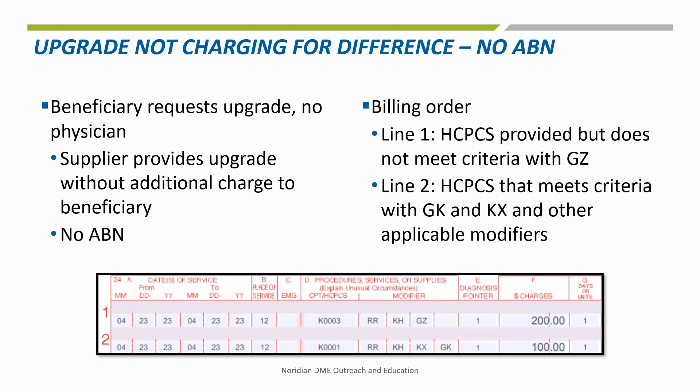In this example, the physician has not ordered the upgrade, but it is provided at the request of the beneficiary and the supplier is providing the upgrade free of charge. In this scenario, bill the HCPCS code for the item that is provided with a GZ modifier on one claim line, and the HCPCS code for the item that meets coverage criteria with the GK modifier on the next claim line, with all other applicable modifiers required — for example, capped rental modifiers and KX modifier when applicable. The codes must be billed in this specific order on the claim. In this situation, the claim line with the GZ modifier will be denied as not medically necessary with a contractual obligation or CO message, and the claim line with the GK modifier will continue through the usual claims processing.